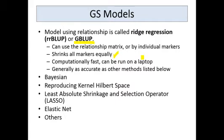The advantage of RRBLUP is that it's computationally fast — it can be run on a laptop, and analyses can be completed in a matter of hours. Generally, it's as accurate as the other methods, which seem biologically more accurate and more important, but they tend to give about the same results as Ridge Regression BLUP. Due to the fact that it's computationally fast, people like to use RRBLUP.